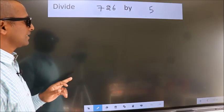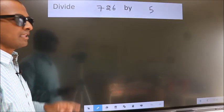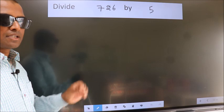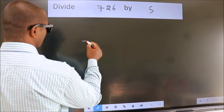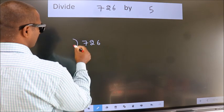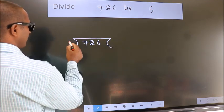Divide 726 by 5. To do this division, we should frame it in this way. 726 here, 5 here.